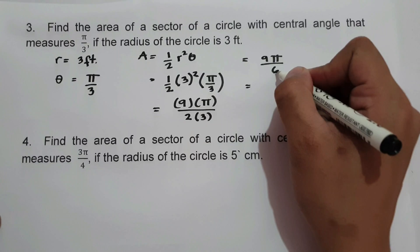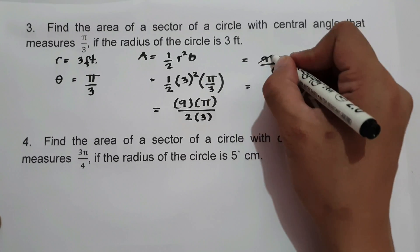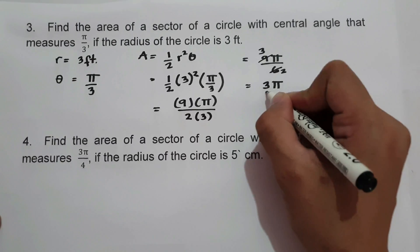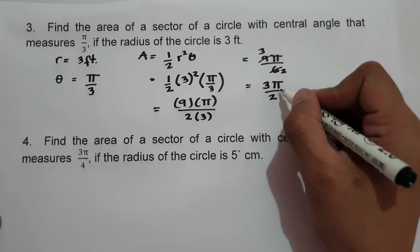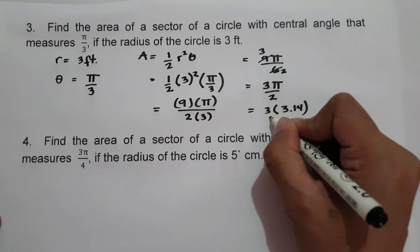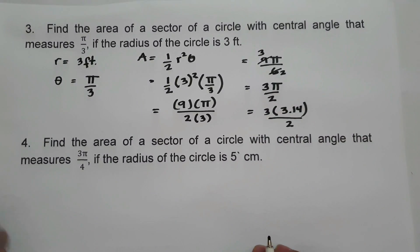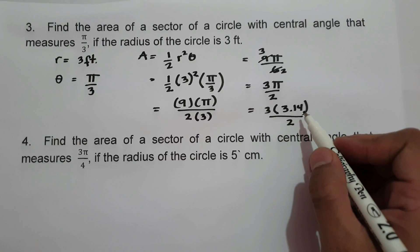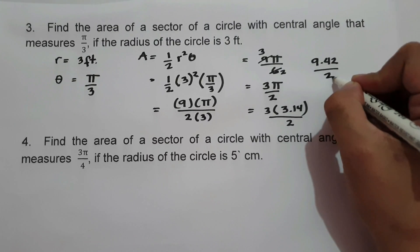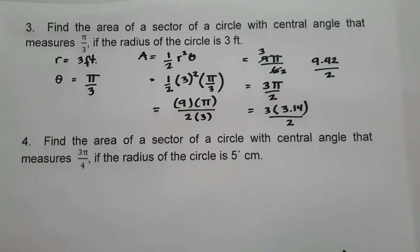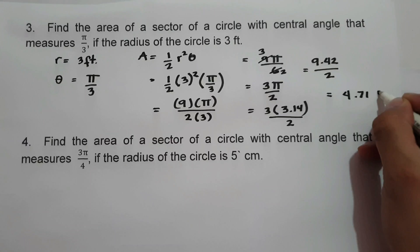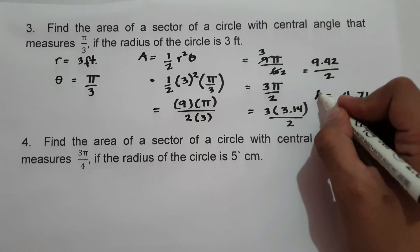Substituting the value of pi as 3.14, we have 3 times 3.14 over 2. Then 3 multiplied by 3.14 is 9.42, and 9.42 divided by 2 is 4.71 feet square. This will be the area of the sector.